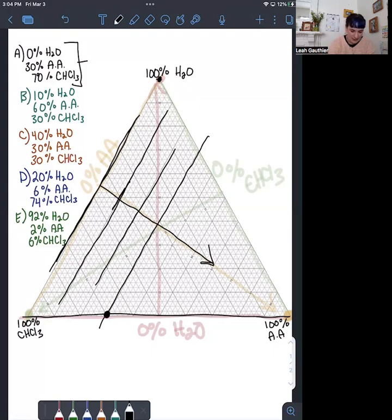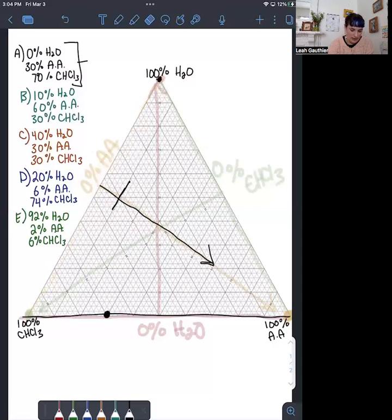If we want to check the chloroform component, we're going to start at 0% chloroform and want to go up to 70%. So that's 0, 10%, 20, 30, 40, 50, 60, and 70%.